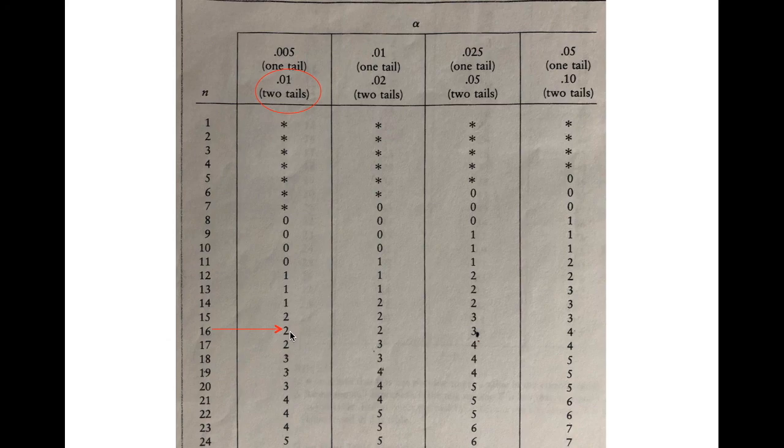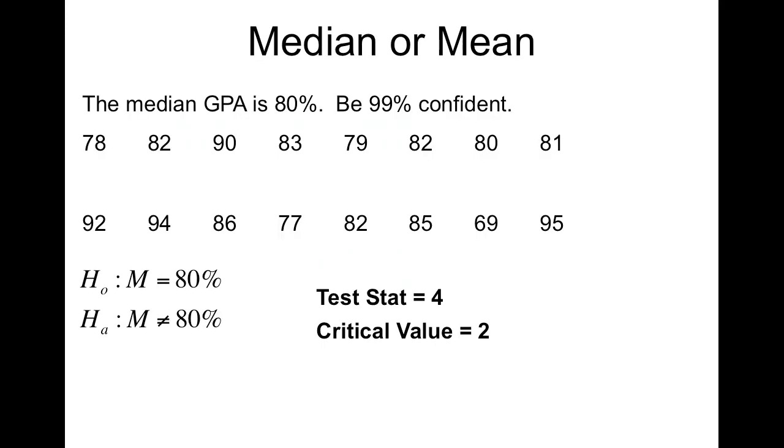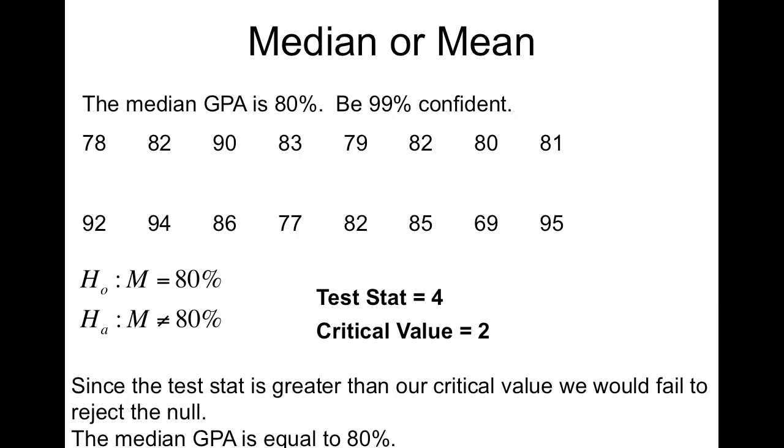So if 2 is our critical value, now we're going to compare test stat and our critical value. Same as before, if the test stat is less than or equal to, you reject. If the test stat is greater than, you fail to reject. Since the test stat is greater than our critical value, we would fail to reject the null. The median GPA is equal to 80%.